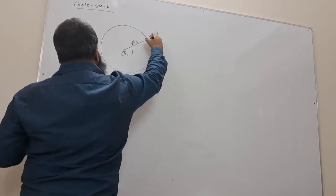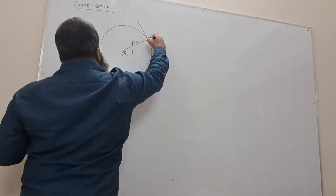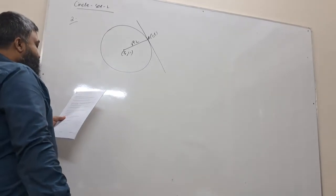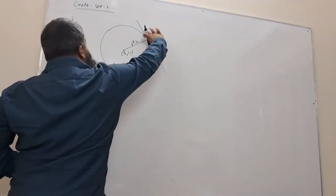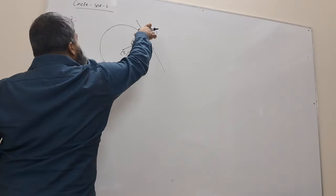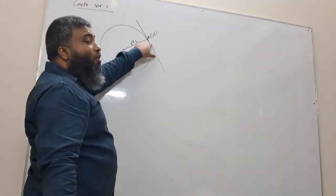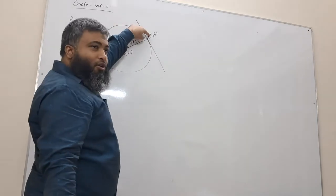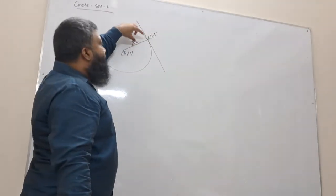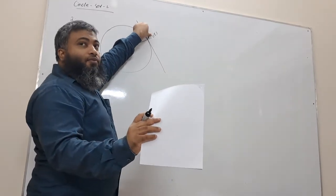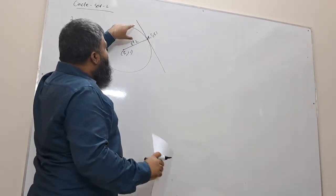We already know A is a point 1, 5 and L is a tangent to the circle. If there is a tangent, it shows that 90 degree proof is needed. So, 90 degree proof is enough.